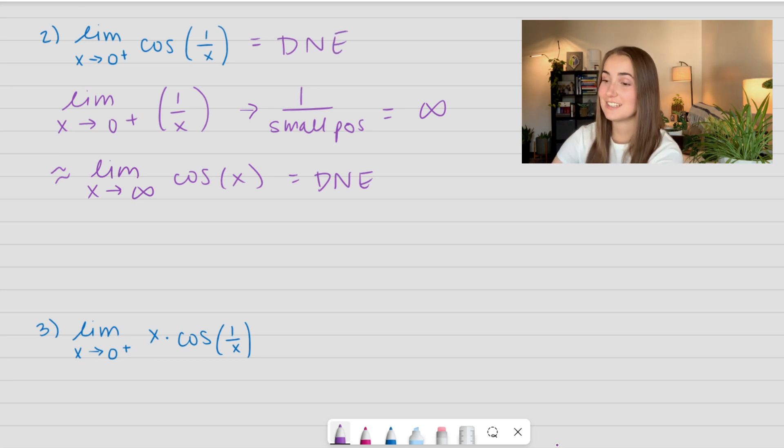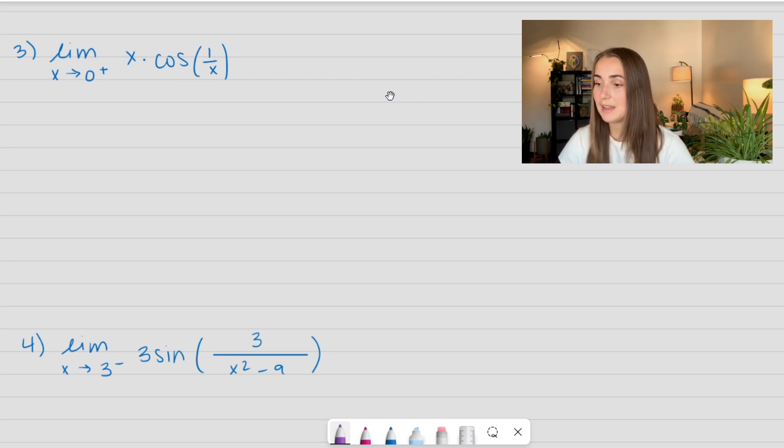Let's look at another example. We have something very similar, but now we're multiplying it by x. So we have the limit as x approaches 0 from the right side of x times some number between negative 1 and 1, right? That's what we talked about earlier.